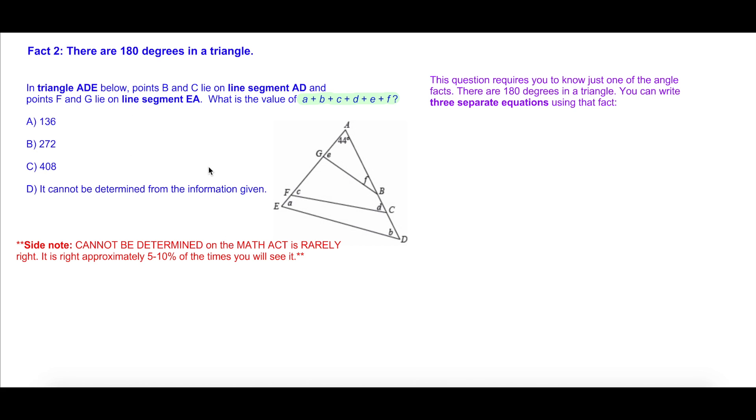Question number two. In triangle ADE below, this lovely figure, points B and C lie on line segment AD, and points F and G lie on line segment EA. What is the value of A + B + C + D + E + F? On first glance, this question looks terrible, I'm going to be honest. But this only requires that you know one of the facts - that there are 180 degrees in a triangle.